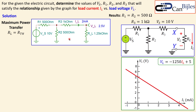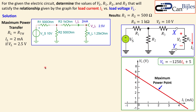With the Thevenin resistance of 1.25 kilohms in series with a matched load of 1.25 kilohms, the total is 2.5 kilohms, giving half the short-circuit current — two milliamps instead of four. This is the maximum power transfer condition. For two milliamps and 2.5 volts, the power is five milliwatts — the maximum power deliverable from this circuit under these conditions.